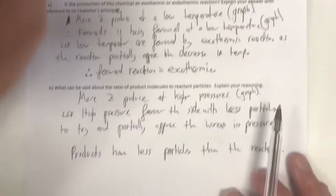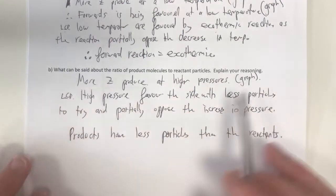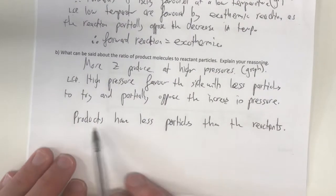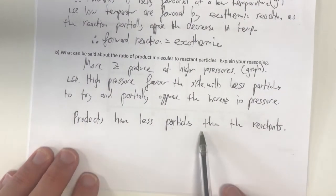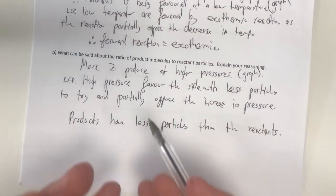We don't know the exact ratio, but we certainly know that the products have less particles because the forward reaction is favoured at a higher pressure. Now, in terms of my reasoning, I'm going through my logic from my graph. What does my graph tell me? And where can I go with that?